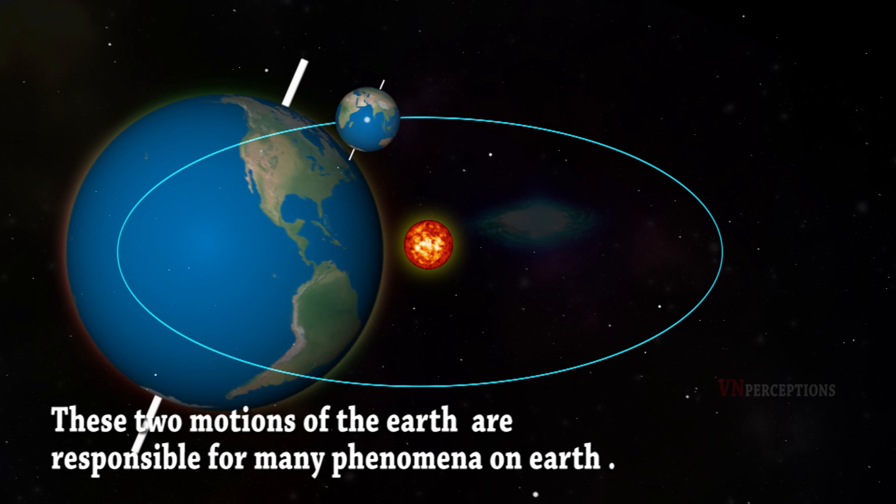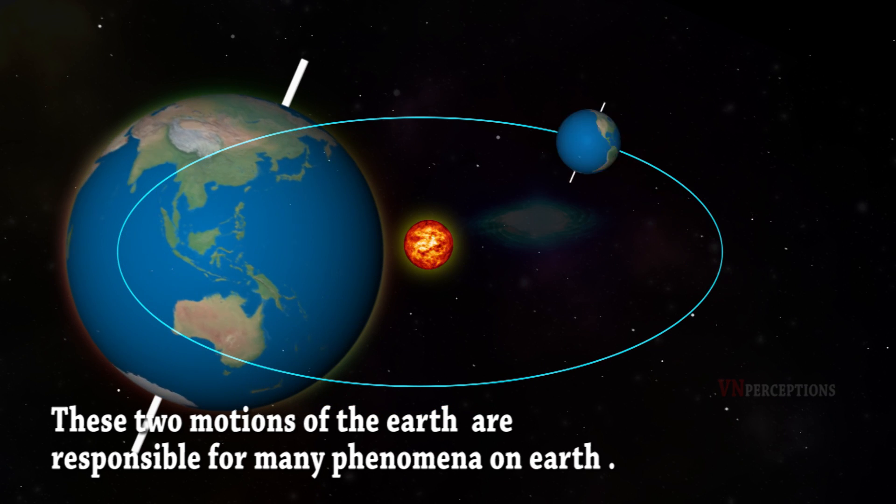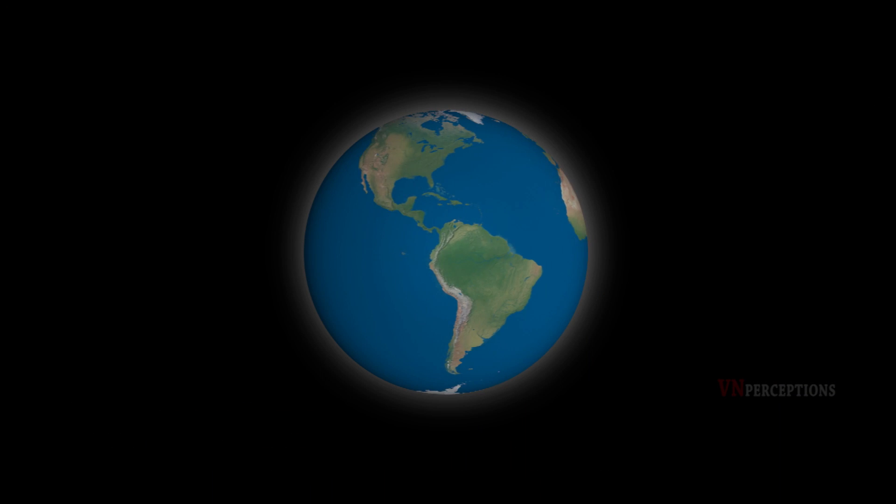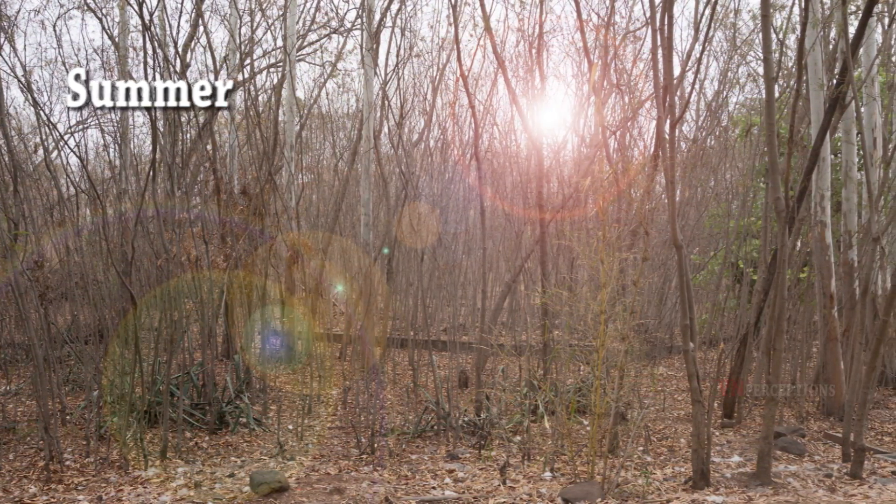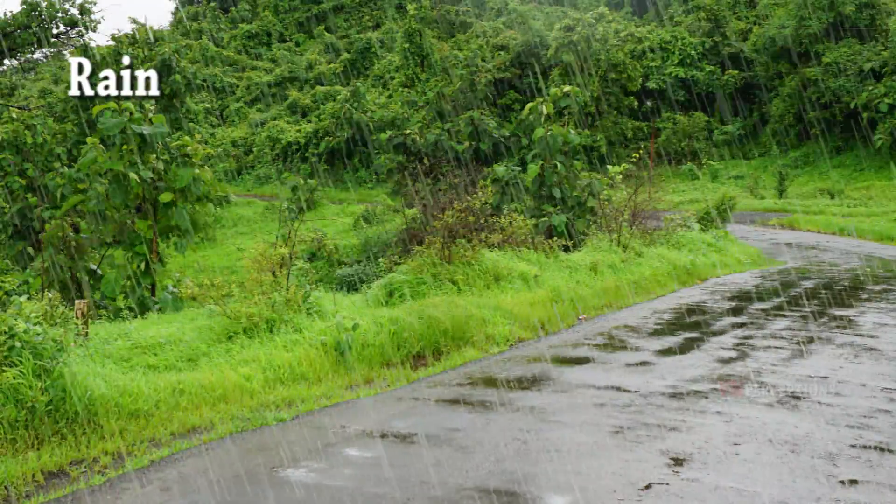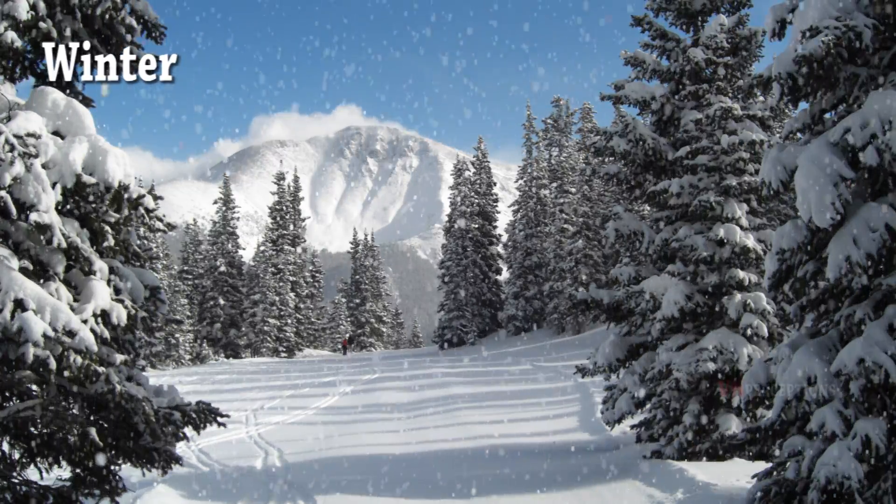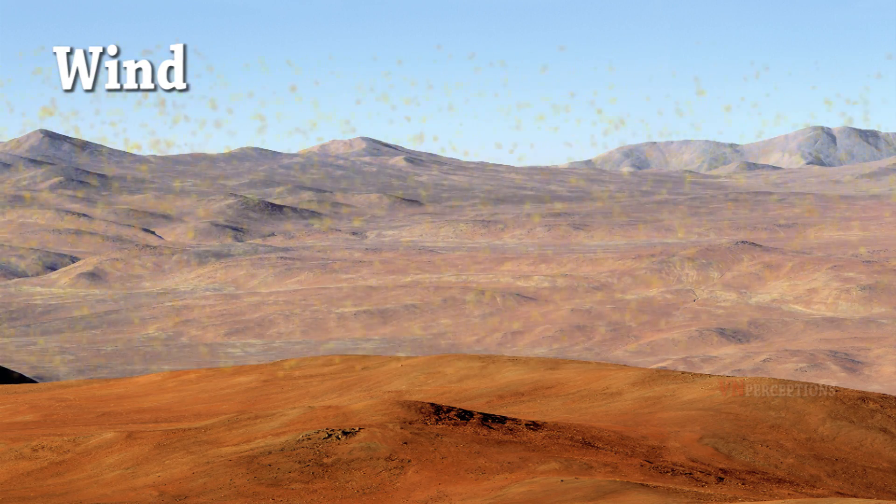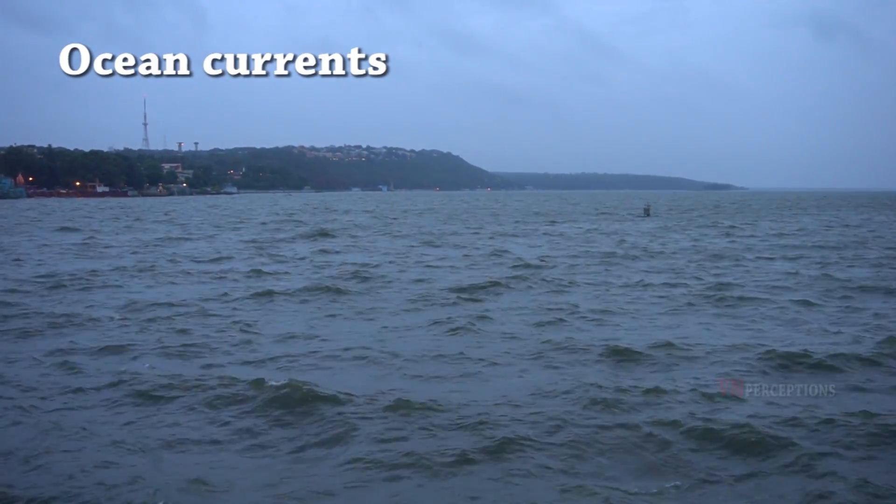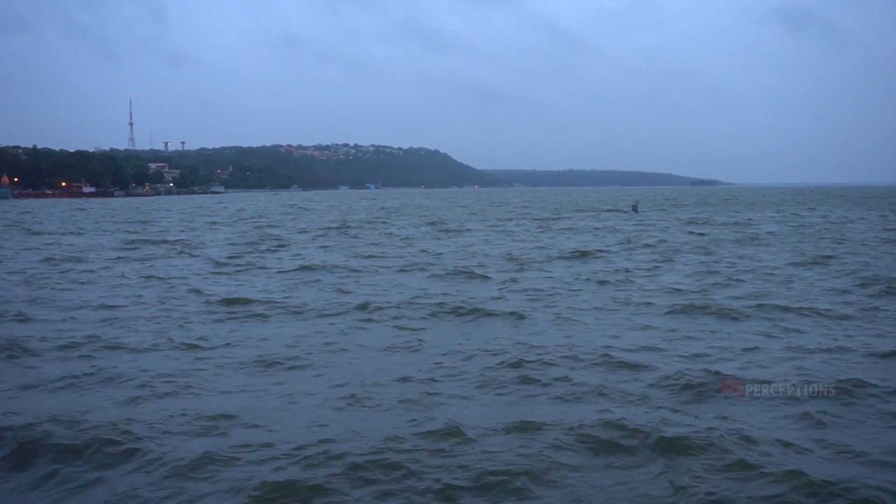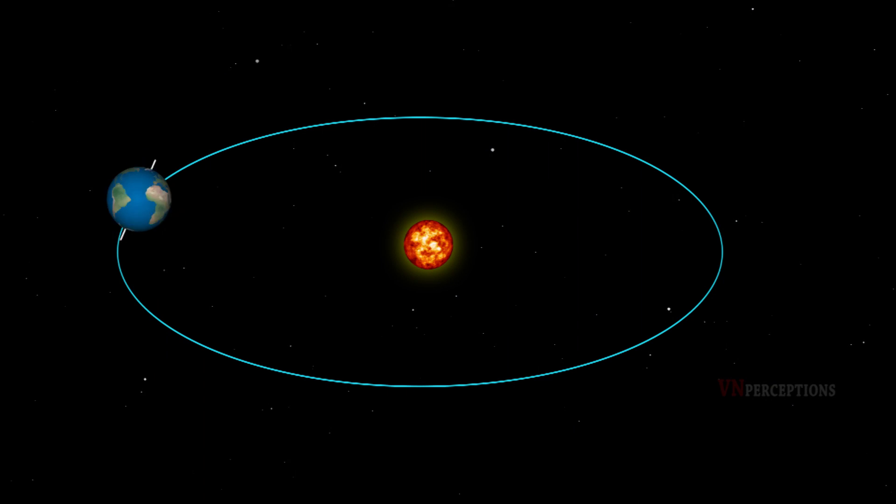These two motions of the Earth - rotation and revolution - are responsible for many phenomena on the Earth, like day and night, seasons, winds, and ocean currents. All these phenomena depend on the rotation and revolution motions of the Earth.